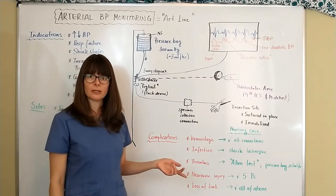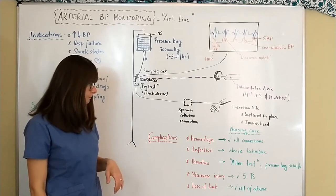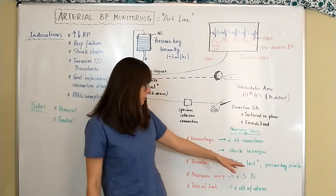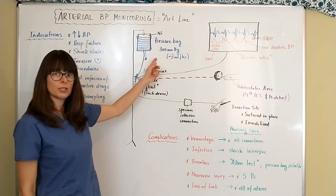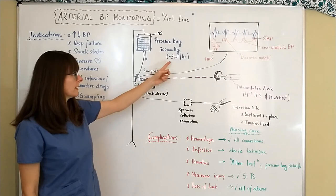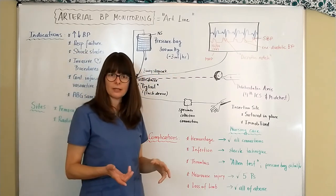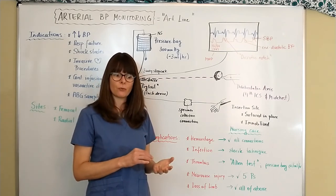So again this Allen test is required before even inserting an art line and this is also a test that the lab personnel is required to do before they do any arterial blood gas sampling. And to prevent the thrombus we also have this pressure bag that we discussed over here that has this continuous infusion of the normal saline at approximately three milliliters per hour.